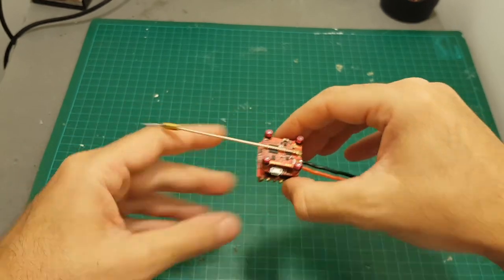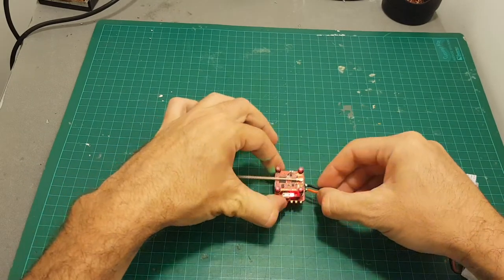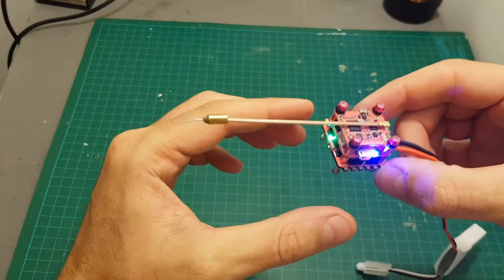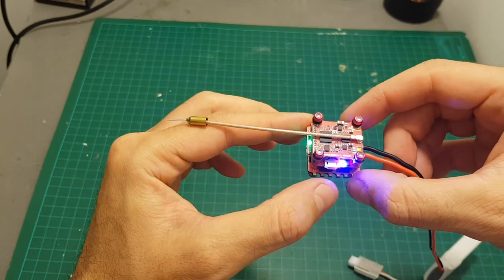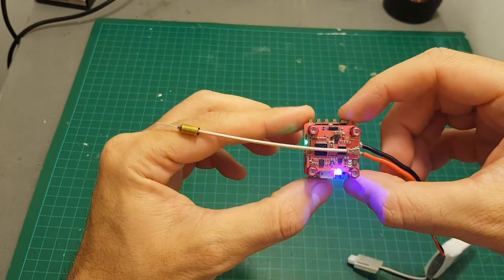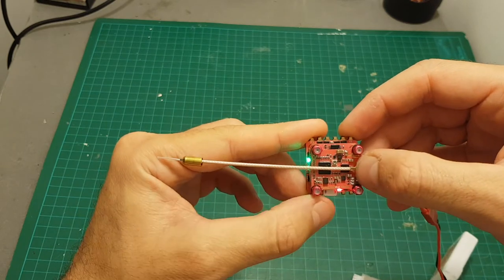So let's power it up and see that everything is working correctly. So the board powers up, everything is working. You can see the ESC also has a light that indicates that it's working, we have the flight controller that is blinking and on the top we have this VTX.